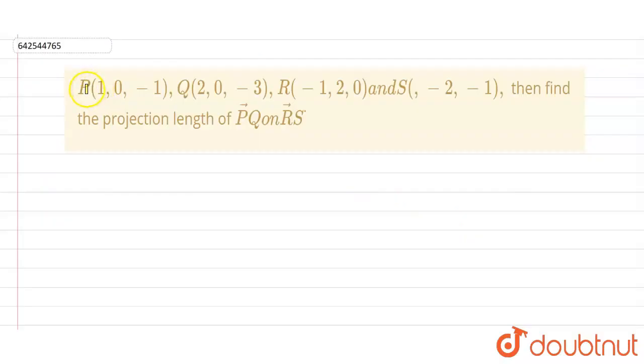Hello everyone, this question 4 points are given. That is P, Q, R and S and their coordinates are also given. Then we have to find the projection length of PQ on RS. Let me just write the coordinates of these 4 points then we will try to solve it.